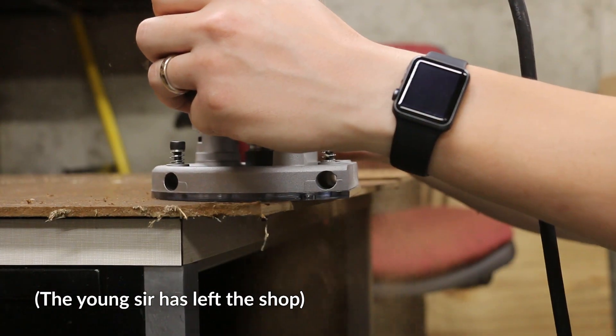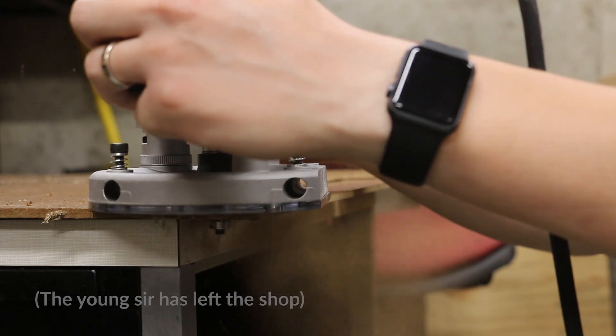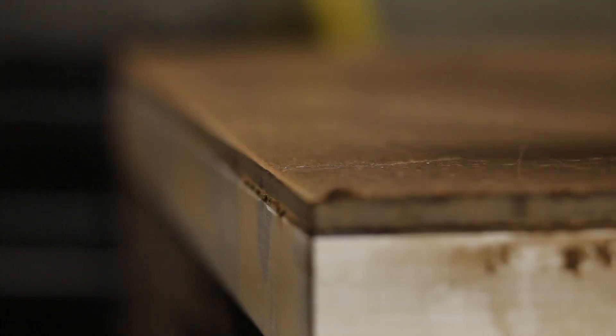I'll use a flush trim bit on the router to cut the hardboard exactly the same size as the top. And then I'll cut off that rough edge with a block plane.